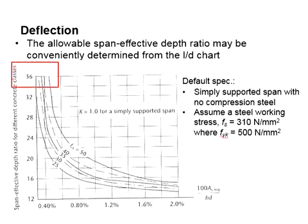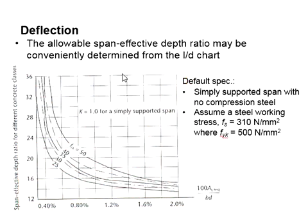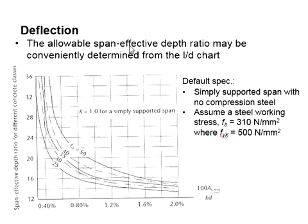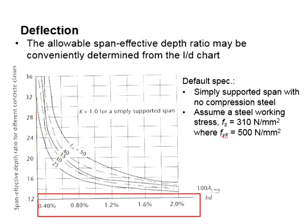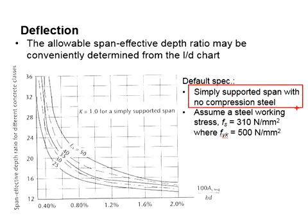You may also use the L/D chart to compute the L/D ratio. However, this chart is not given in Eurocode — Eurocode provides the equations instead. Some reinforced concrete design references will provide this chart. The y-axis represents the L/D ratio, the x-axis represents rho, and the curves represent the concrete strength, plotted with k equals to 1.0.